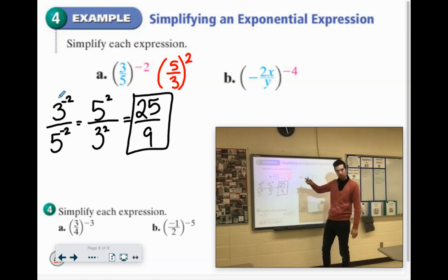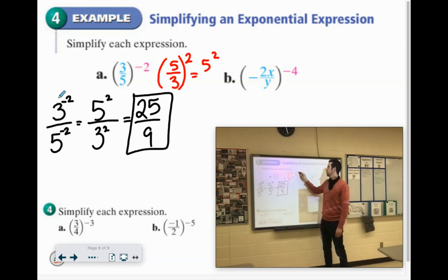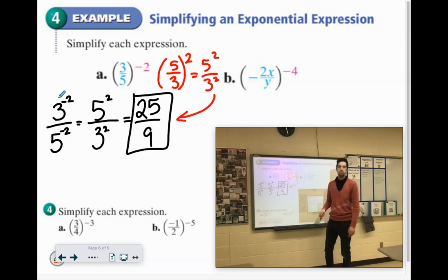So if you use the reciprocal, you can make it go from negative 2 to positive 2. And then you're doing 5 squared over 3 squared, which would get you to that 25 over 9 that way.